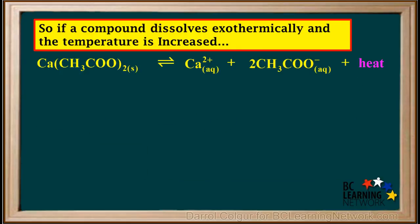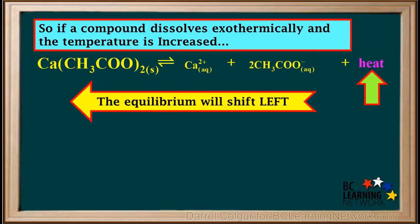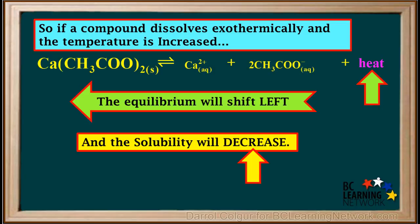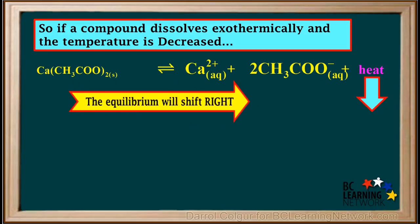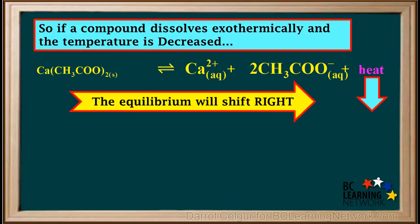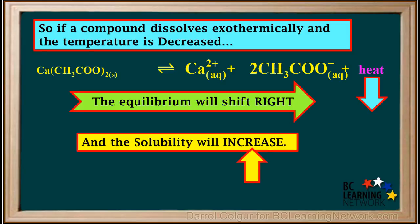So to summarize: if a compound dissolves exothermically and the temperature is increased, the equilibrium will shift to the left and the solubility will decrease. And if a compound dissolves exothermically and the temperature is decreased, the solubility equilibrium will shift to the right and the solubility will increase.